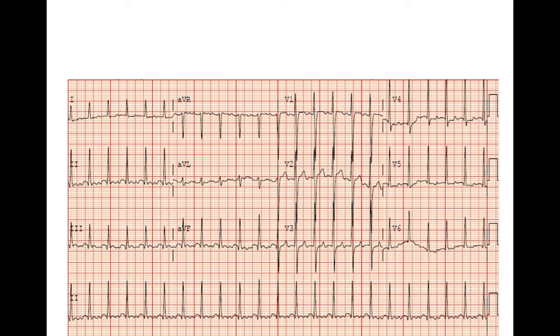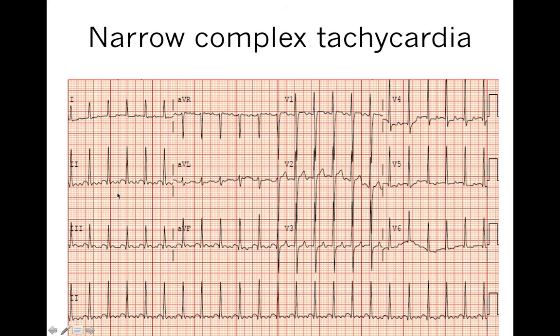Here's another example. This is a narrow complex tachycardia of some sort. We do see P waves, but they don't look like sinus P waves — they're not positive in leads 1 and 2. So this could be AVRT, atrial tachycardia, atypical AVNRT, or atrial flutter. To clarify, we can give adenosine to block the AV node: if it terminates, it's likely AVNRT or AVRT; if it continues, it's either atrial tachycardia or atrial flutter.